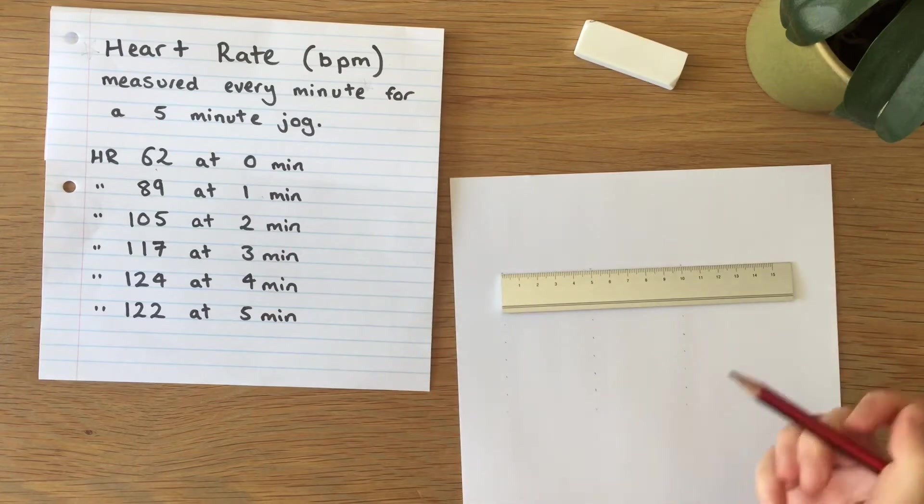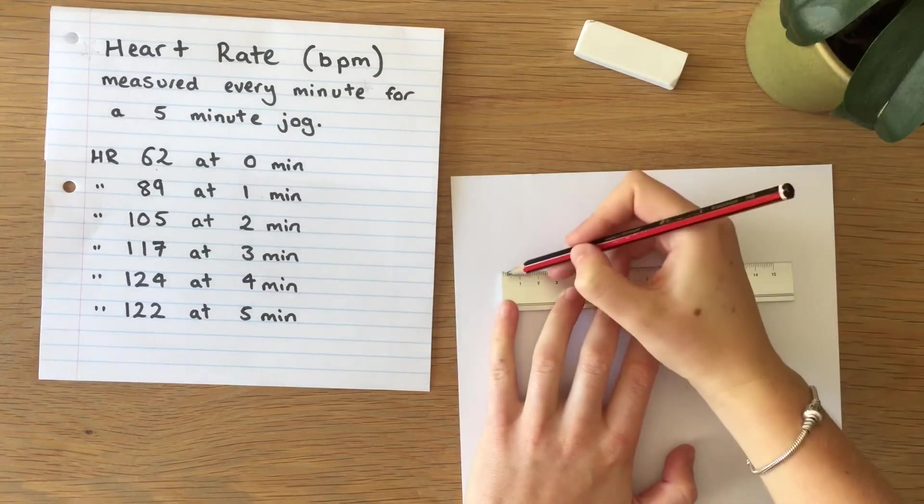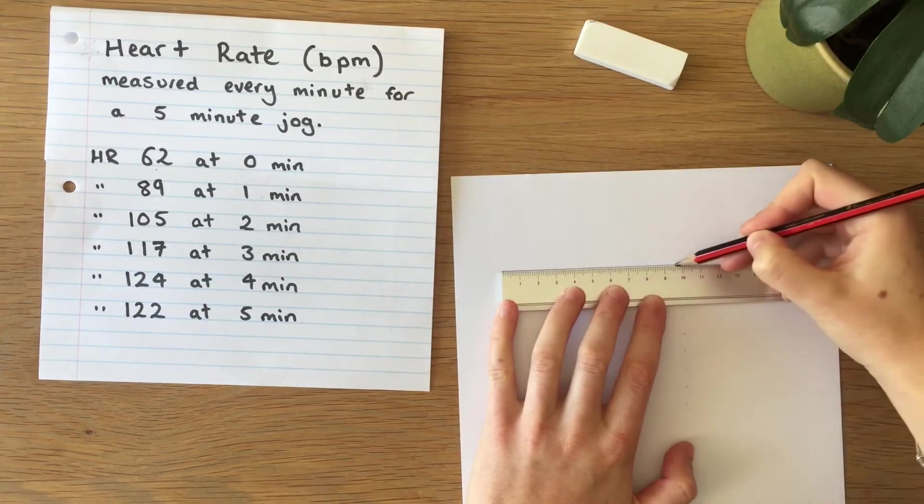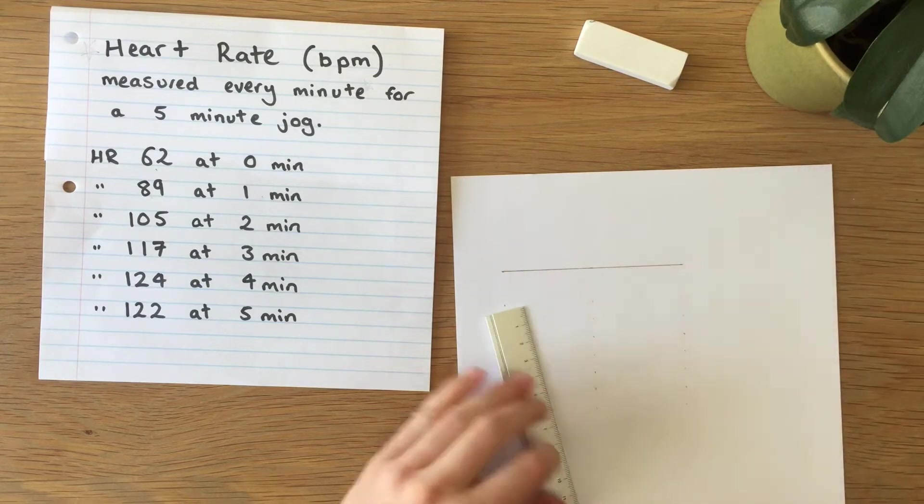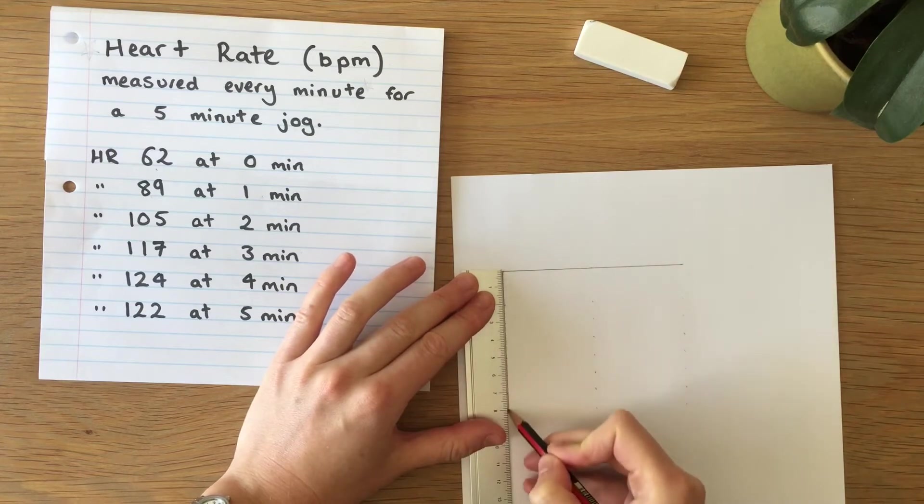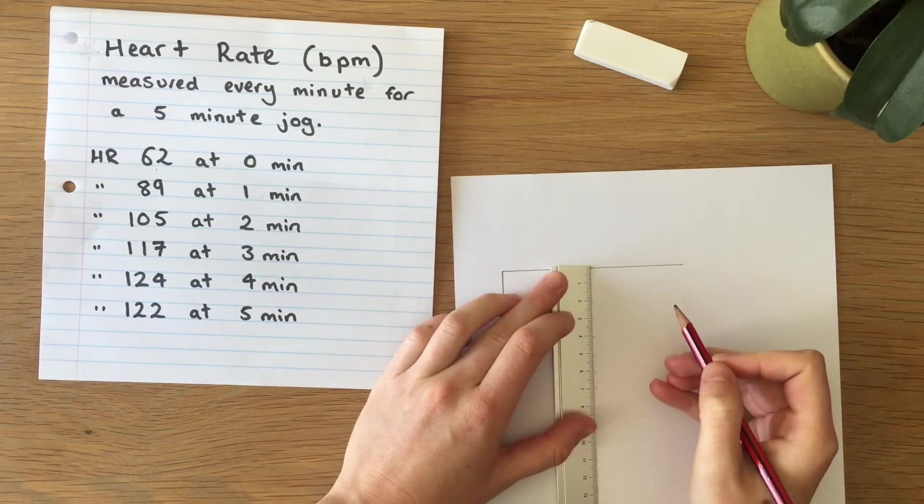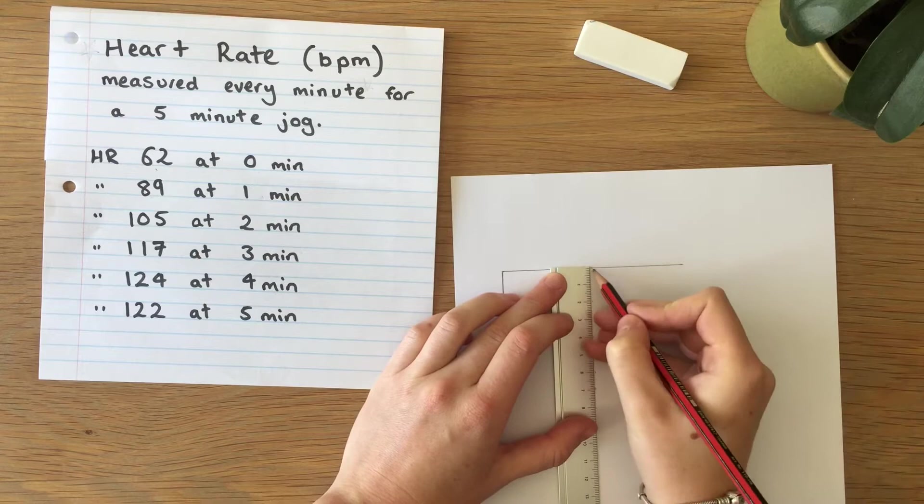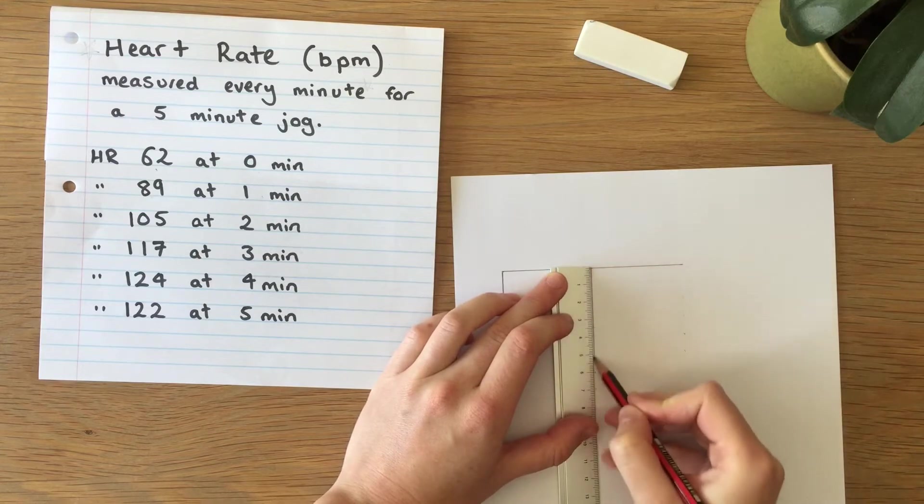Here is data from an investigation that we are going to put into a table. The data is quite messy at the moment so our table is going to clarify that. The data is looking at heart rate measured every minute on a short five minute jog.